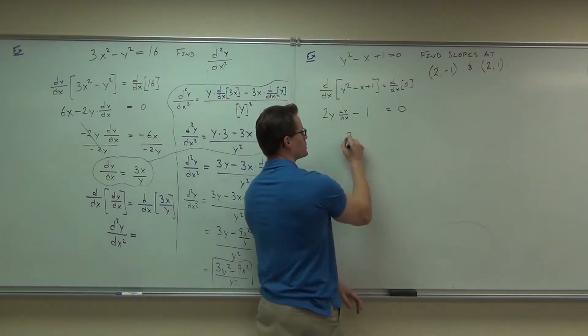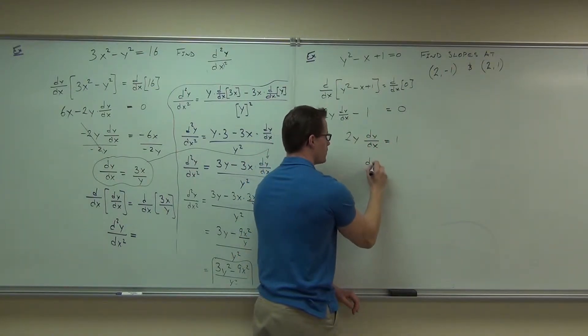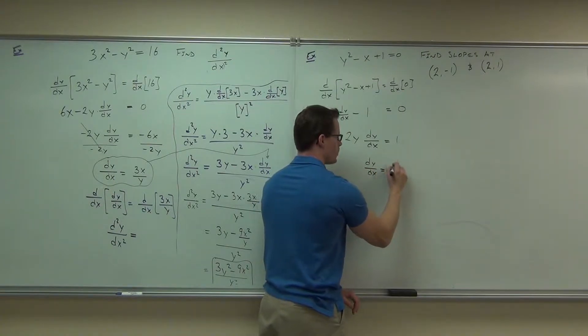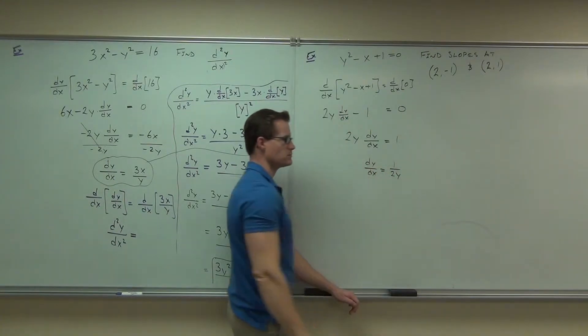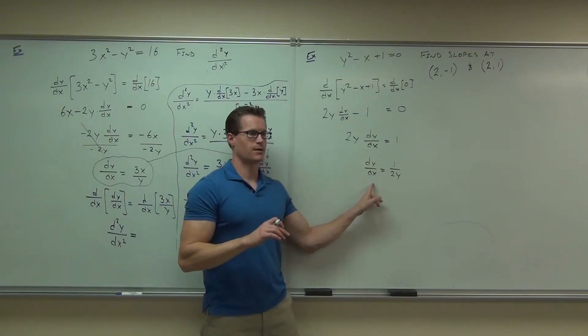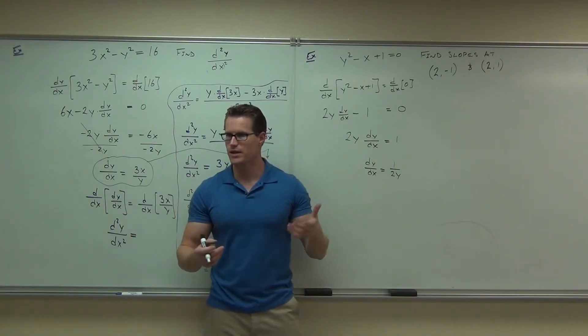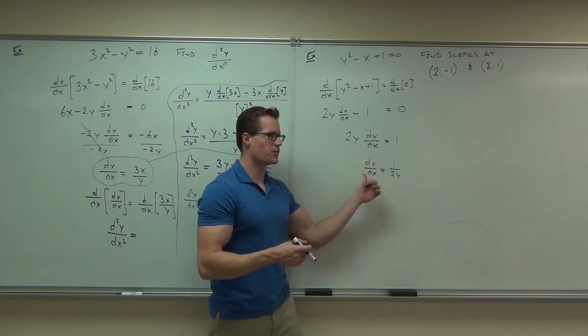Can you solve that? If you add one, you're going to get two y dy dx equals one. If you divide by two y, you get dy dx equals one over two y. What did you just solve for? What is this thing? That's m. Yeah, that's it. That's slope. That's what that is. So this is a slope function.